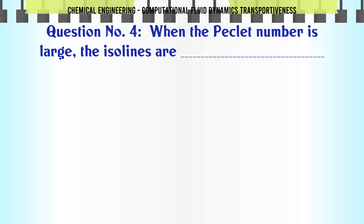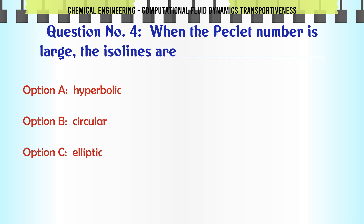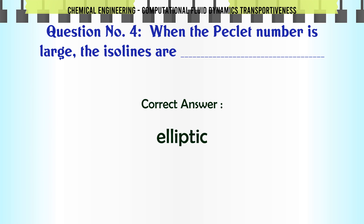When the Peclet number is large, the isolines are: A. Hyperbolic. B. Circular. C. Elliptic. D. Parabolic. The correct answer is elliptic.